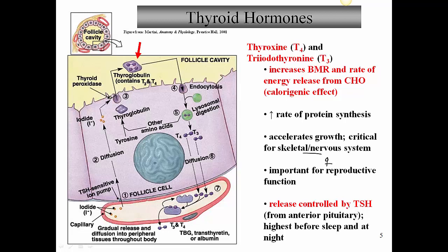The release of thyroid hormone from the thyroid gland is controlled by TSH from the anterior pituitary. TSH release in turn is controlled by thyrotropin-releasing hormone. TSH reaches its highest levels before sleep and is usually at its highest at night, so there is a circadian rhythm - a 24-hour rhythm - to the secretion of thyroid hormones.